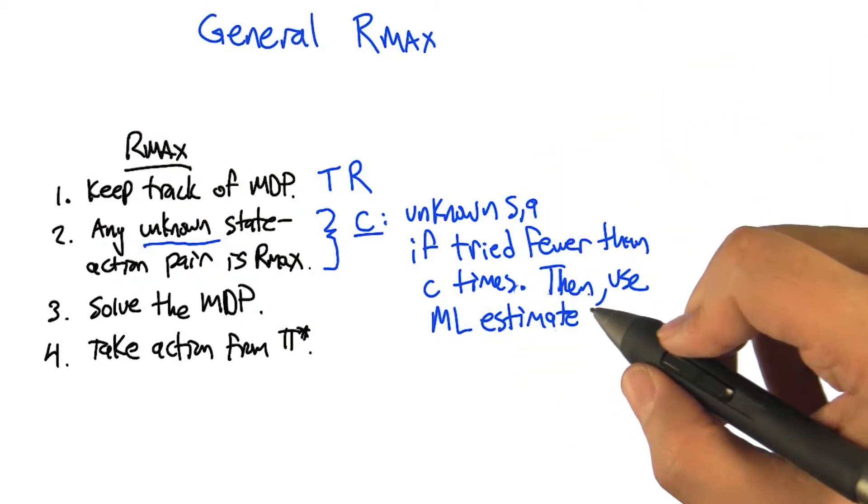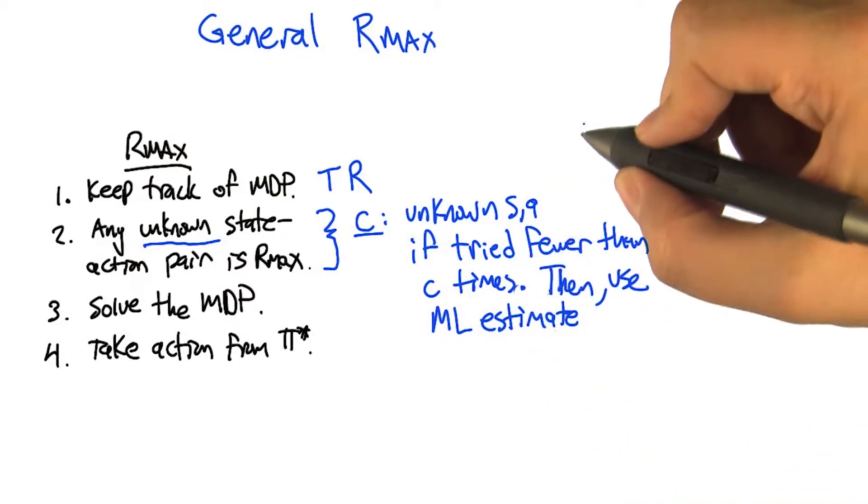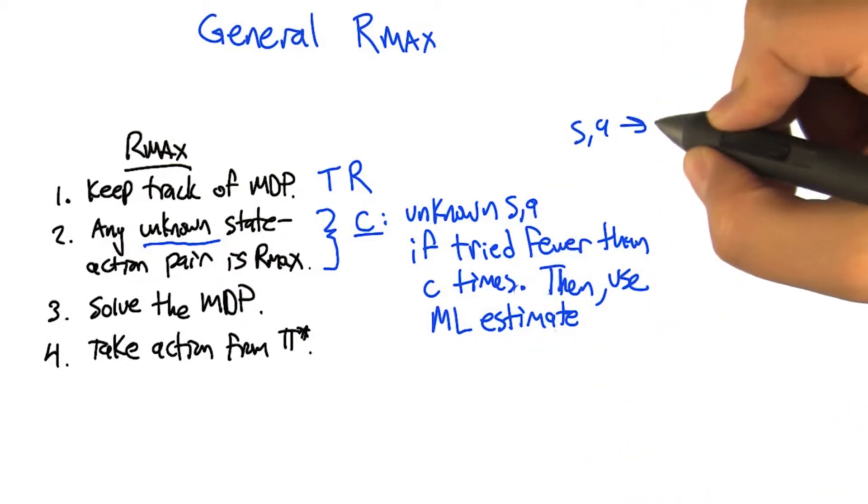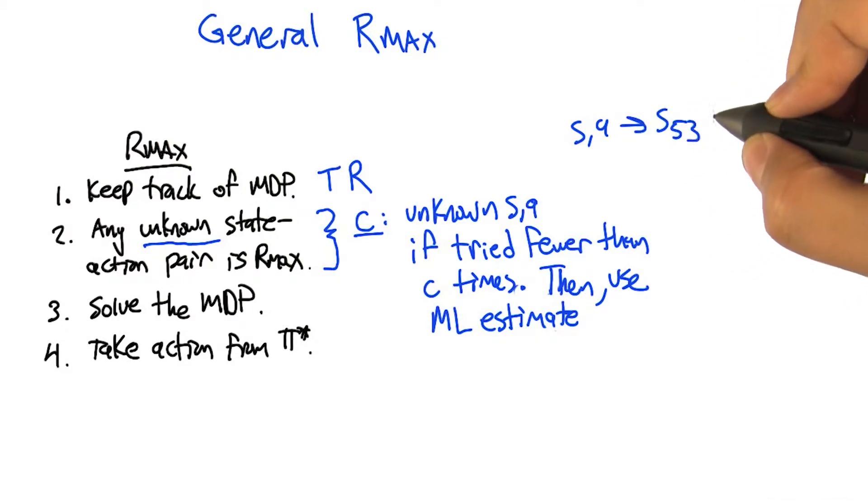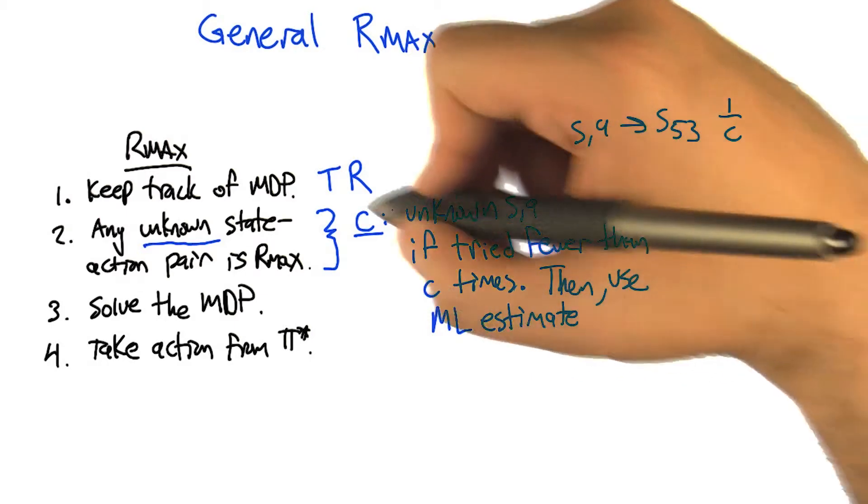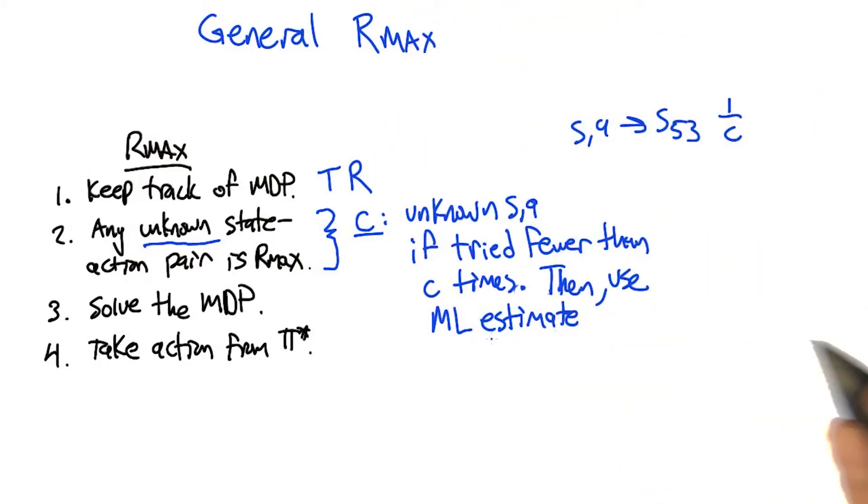So we've tried it C times, and we saw we went from state S with action A to some state, S53. So if we did that some number of times, if we only did that once, then we're going to estimate a probability of 1 over C for getting that transition. So this gives us a new estimate of the transitions and rewards based on the data that we've actually gathered.